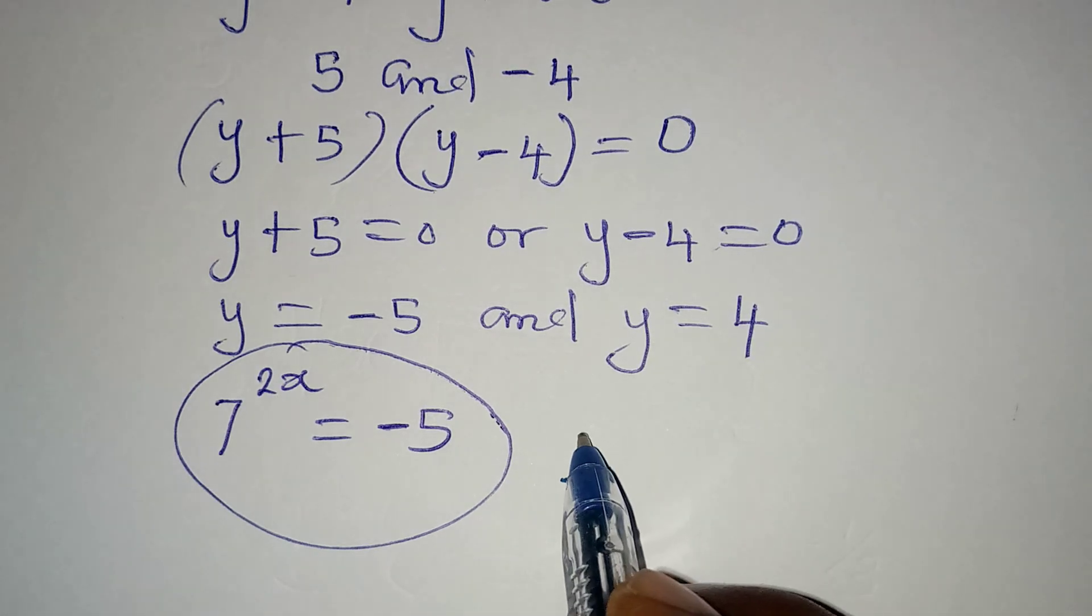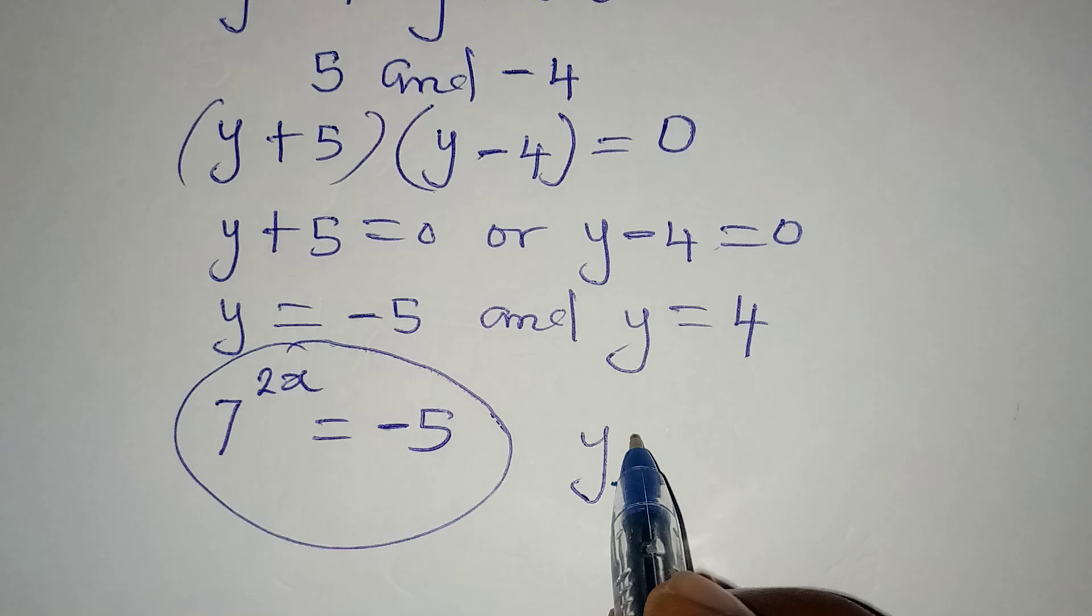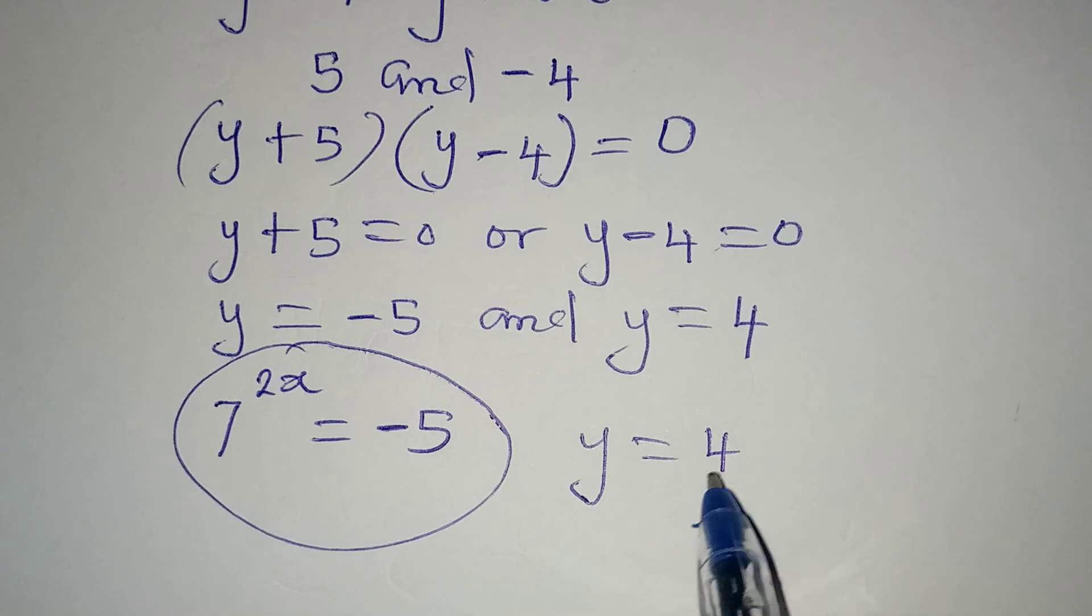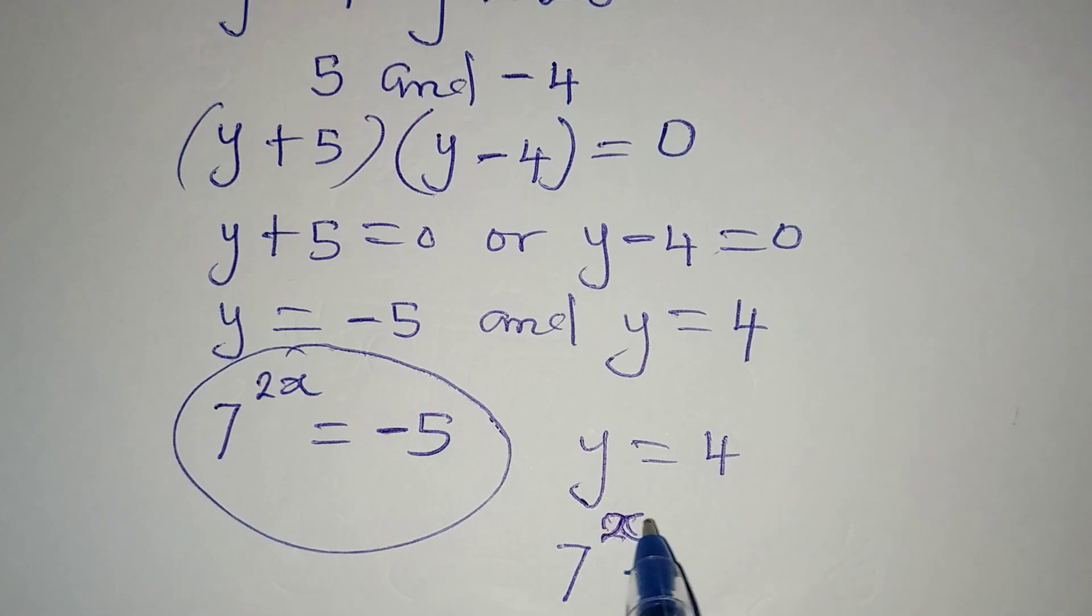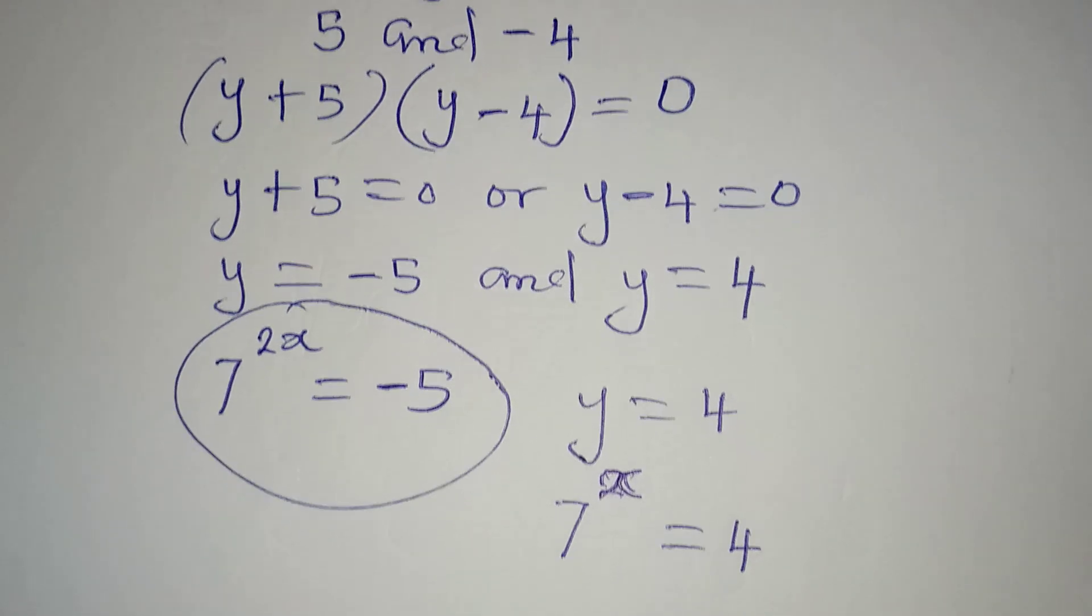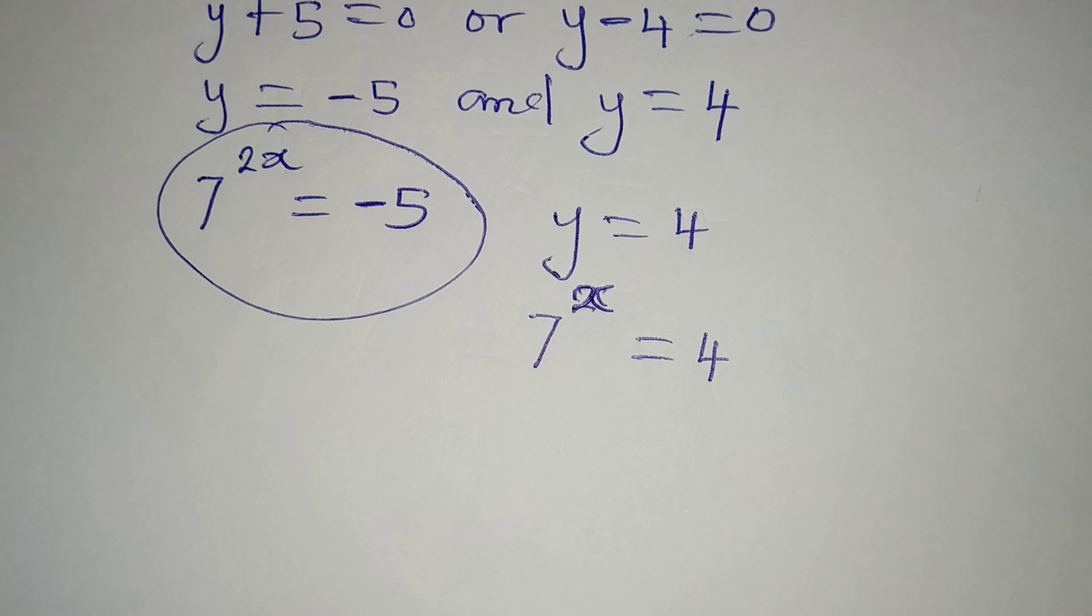On this side, we have y equal to 4, and y is 7 to the power of x. So 7 to the power of x will be equal to 4.